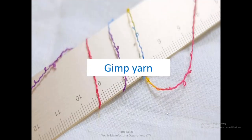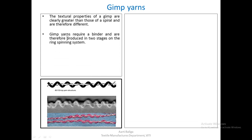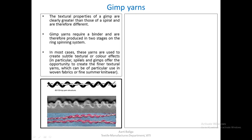The next yarn type is the jimp yarn. The textural properties of a jimp yarn are clearly greater than those of a spiral yarn and they are therefore different. Jimp yarns are somewhat similar to spiral yarns in how they are made, but they have a greater textural effect. Jimp yarns require a binder and are therefore produced in two stages on the ring spinning system.